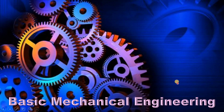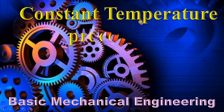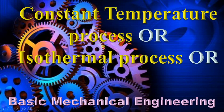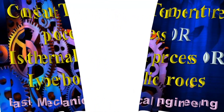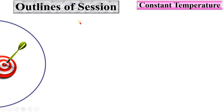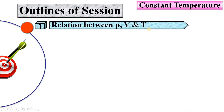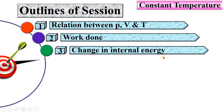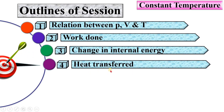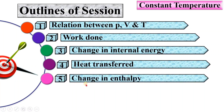Welcome to my basic mechanical engineering playlist. Today I am going to discuss about the constant temperature process, also called the isothermal process, or sometimes the hyperbolic process. The outlines of the session are: relation between pressure, volume and temperature; work done; change in internal energy; heat transfer; and change in enthalpy. Let us see all these terms one by one.